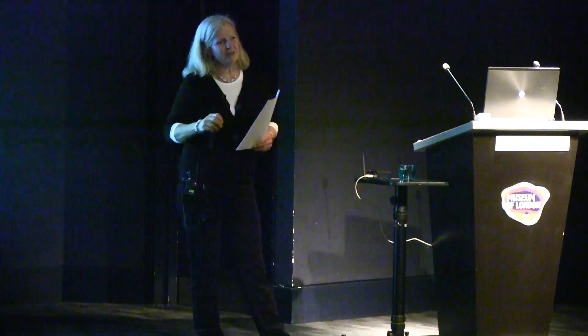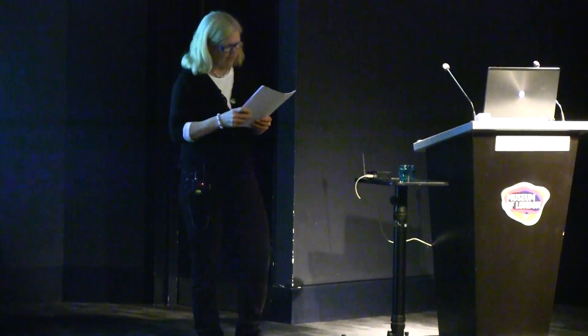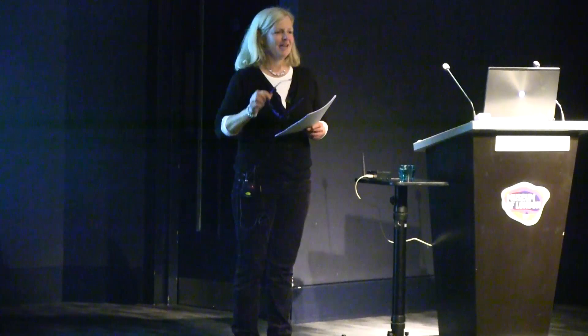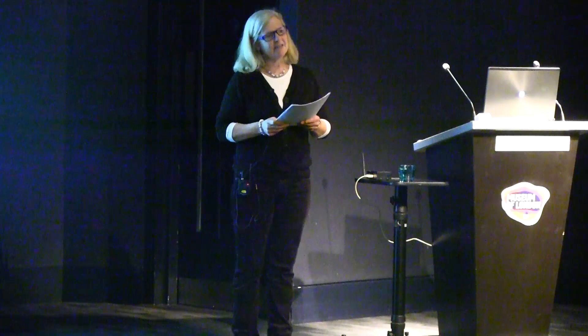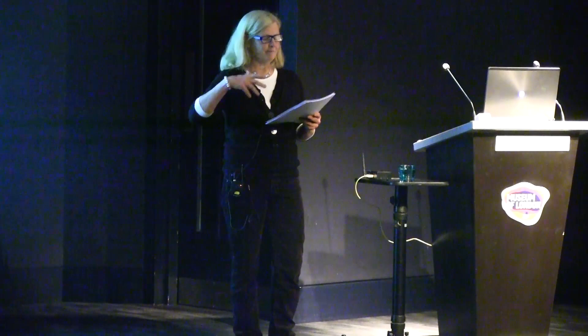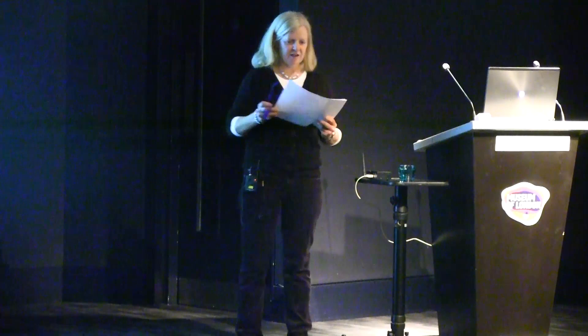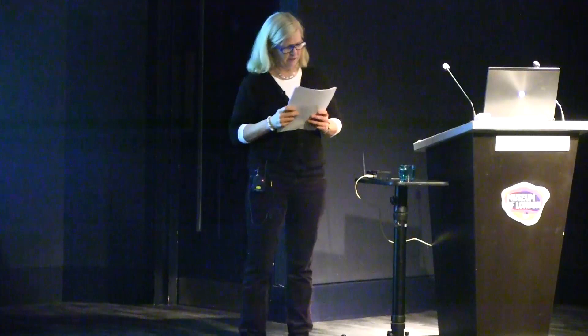What about the stately pleasure domes in Coleridge's 'Kubla Khan'? The first line is: 'In Xanadu did Kubla Khan a stately pleasure dome decree, where Alph the sacred river ran through caverns measureless to man down to a sunless sea.' According to Coleridge's preface, he wrote the poem in an opium-inspired state — he'd had a dream and had been reading about Xanadu, which is a real place, the Mughal emperor of China's summer palace. This is how the Victorian illustrator Patton Wilson envisaged Coleridge's pleasure dome: a fantasy, extensive, exotic, very much the stuff of dreams.